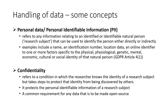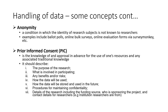Confidentiality is therefore the protection of the personally identifiable information of a research subject, and it is a common requirement for any data that is to be made open access. A similar but different concept is anonymity, which is the condition in which the identity of a research subject is not known to researchers. Examples include ballot polls and online surveys through tools like SurveyMonkey, where the identity of a person is unlikely to be known.